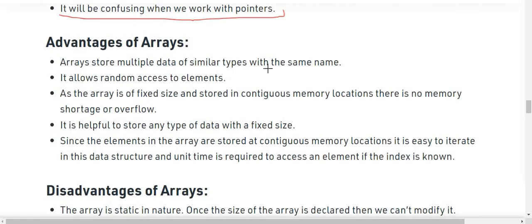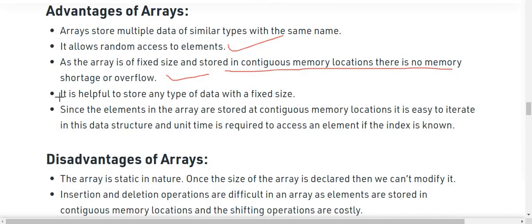Advantages of arrays: arrays store multiple data of similar types with the same name. They allow random access to elements. As the array is of fixed size and stored in contiguous locations, there is no memory shortage or overflow. It is helpful to store any type of data with a fixed size. Since the elements in the array are stored at contiguous memory locations, it is easy to iterate in this data structure and unit time is required to access an element if the index is known.